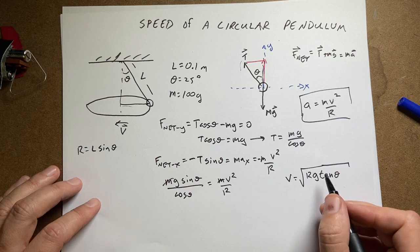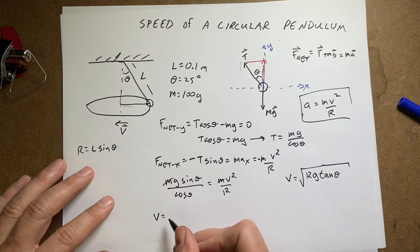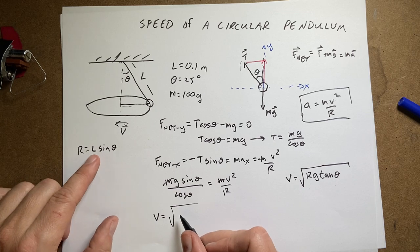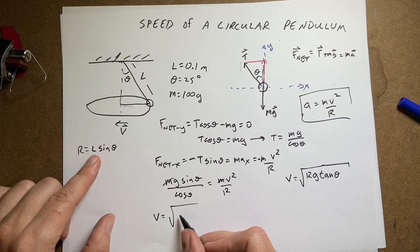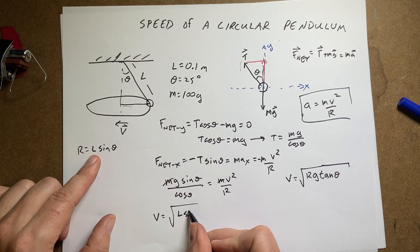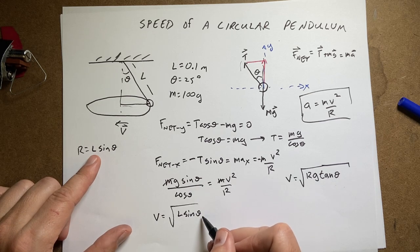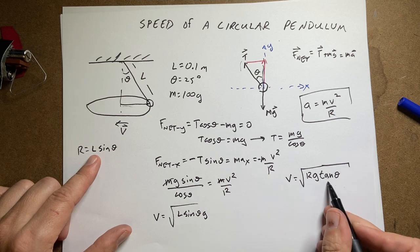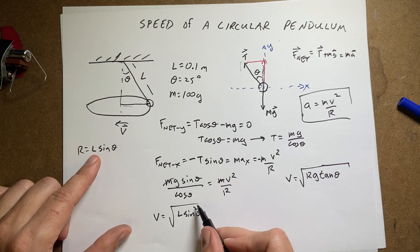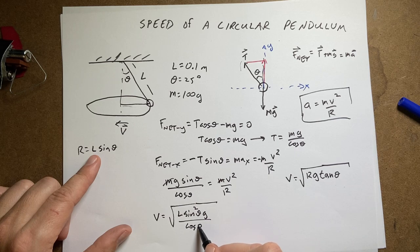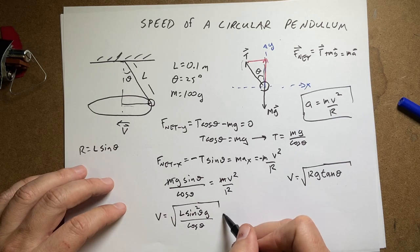Actually, let's put that back as tangent. So I get V equals the square root of R, which is L sine theta, times G, times sine theta. So I have sine squared theta over cosine theta.